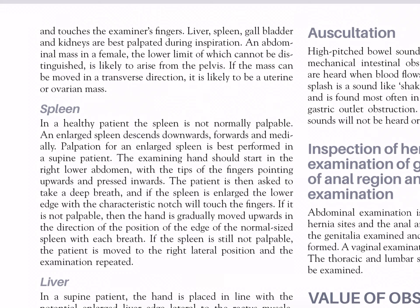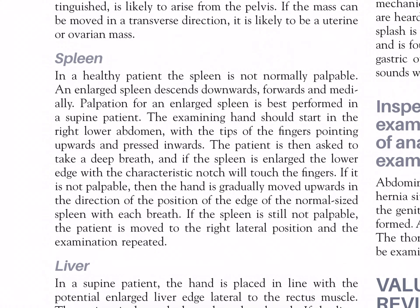An abdominal mass in a female, the lower limit of which cannot be distinguished, is likely to arise from the pelvis. If the mass can be moved in a transverse direction, it is likely to be a uterine or ovarian mass. Spleen: in a healthy patient, the spleen is not normally palpable, and an enlarged spleen descends downwards, forwards, and medially. Palpation for an enlarged spleen is best performed in the supine patient; the examining hand should start in the right lower abdomen with the tips of the fingers pointing upwards and pressed inwards. The patient is then asked to take a deep breath — if the spleen is enlarged, the lower edge with the characteristic notch will touch the fingers. If not palpable, the hand is gradually moved upwards toward the position of the normal-sized spleen's edge with each breath. If the spleen is still not palpable, the patient is moved to the right lateral position and the examination is repeated.